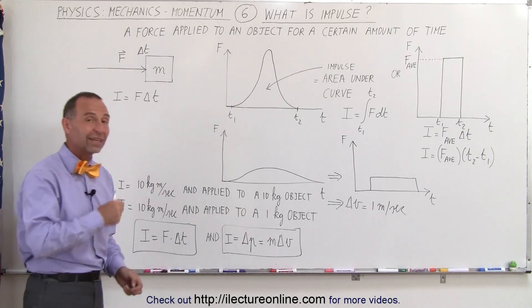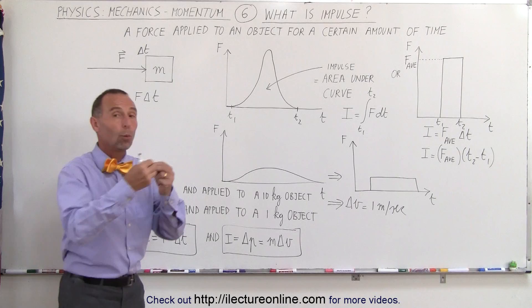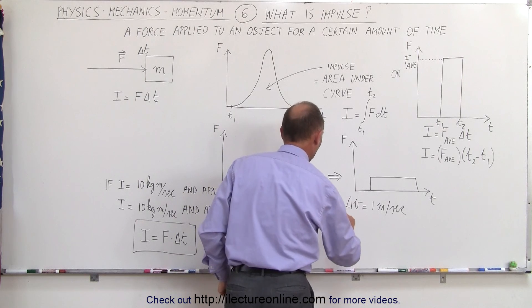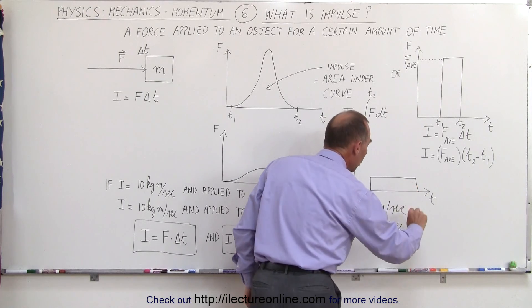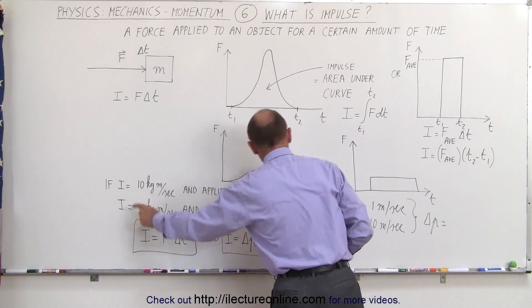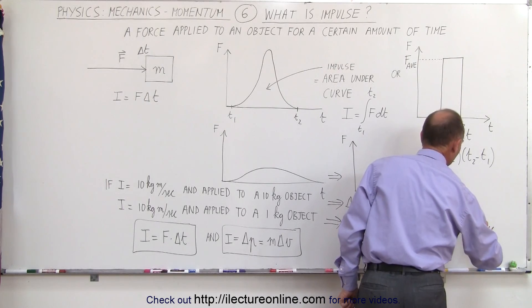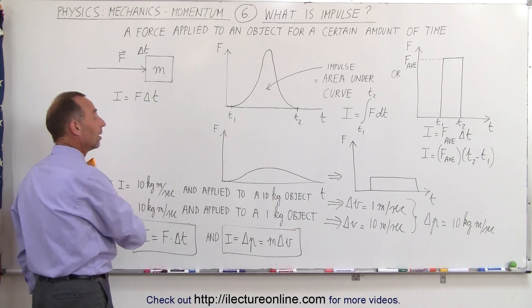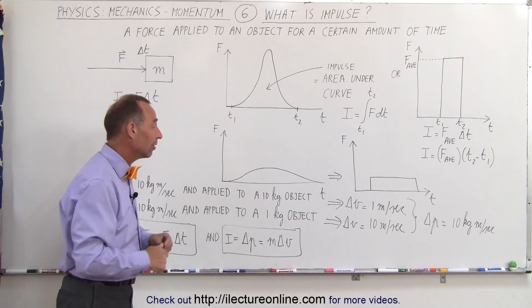So if you apply the same momentum to a smaller object, one that is only one-tenth the size, 1 kilogram instead of 10 kilograms, then the change in velocity will be 10 times as large. One-tenth the mass, same amount of impulse, 10 times the change in velocity. So in this case, the change in velocity would be equal to 10 meters per second. But in both cases, the change in momentum is going to be equal to the change of the impulse, which is going to be 10 kilograms meters per second. So notice that the change in momentum is always equal to the impulse, but the change in velocity depends upon how large the object was upon which the impulse is applied.